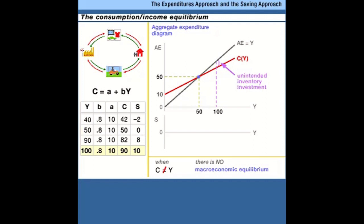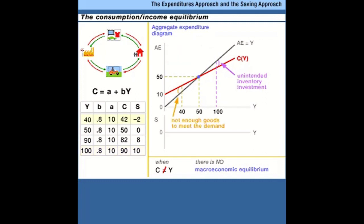On the other hand, if income were lower, say down at 40, then consumers are planning to spend 42 but income is only 40 — there's not enough stuff to satisfy consumer demand. In that case, inventories are being drawn down, and businesses have to produce more goods and services to satisfy consumer demand. As they increase production, income will increase until we return to 50, the stable equilibrium income in this model.